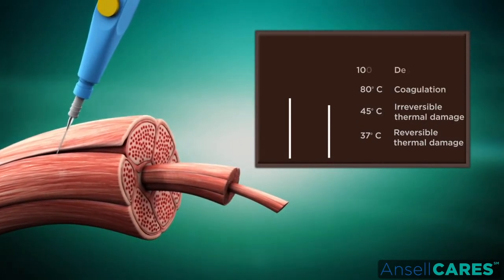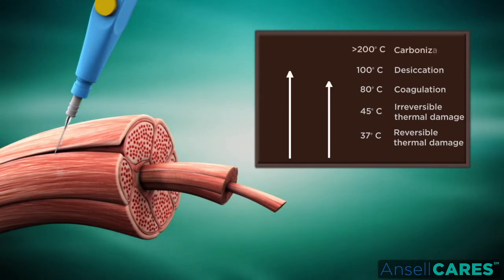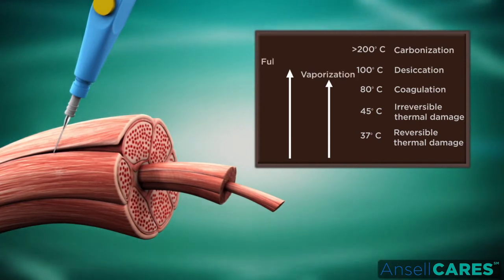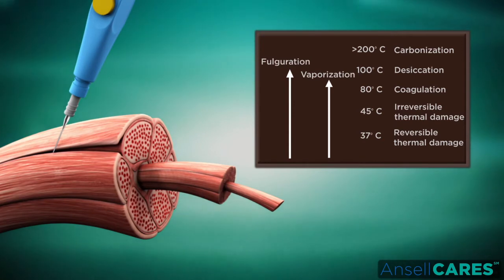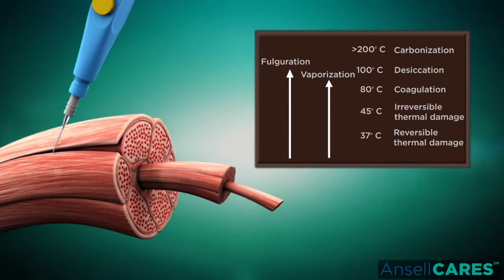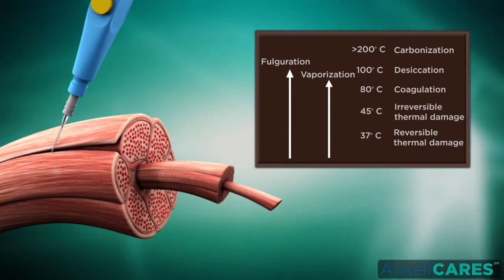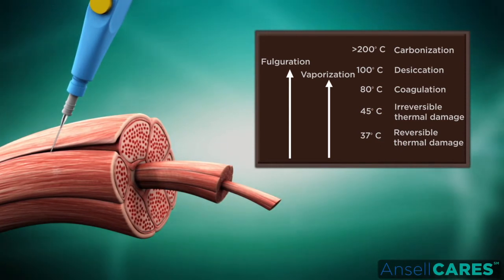Once tissue temperature exceeds 45 degrees Celsius, the proteins in the tissue become denatured, losing their structural integrity. Above 90 degrees Celsius, the liquid in the tissue evaporates, resulting in desiccation or vaporization depending on how the heat is transferred. At 200 degrees Celsius, the remaining solid components of the tissue are reduced to carbon.